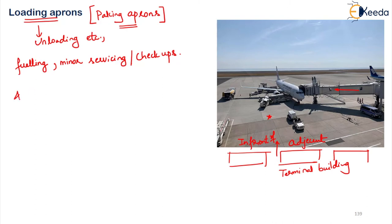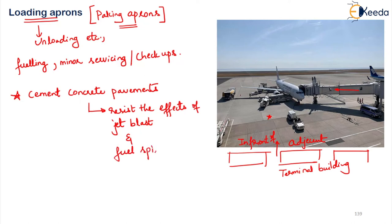Normally it is desirable to go for cement concrete pavement in case of your loading apron. The reasons for going for this type of pavement is that it will resist the effect of jet blast which will come out of the jet engines when they start, and also it will resist the fuel spillage and will be strong enough to withstand all the loading coming onto the pavement.